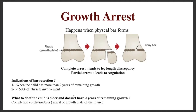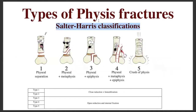If a child is older and doesn't have two years of remaining growth, you're basically going to do a surgical arrest of growth in the same injured bone, and also do an arrest in the other leg so that you don't have a leg length discrepancy.